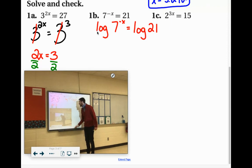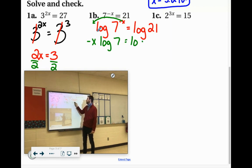And then remember, we take that exponent and we kick it to the front. So we say negative x times log 7 equals log 21. We don't want the log 7 there. So it's being multiplied. So let's go ahead and divide both sides by log 7.